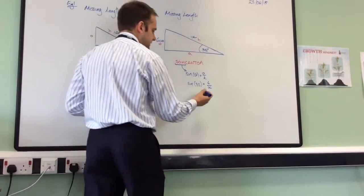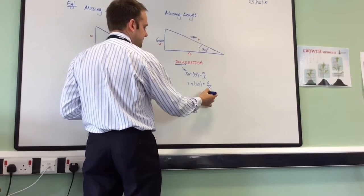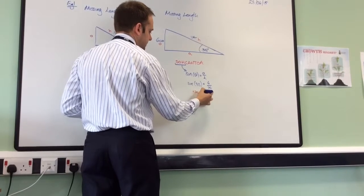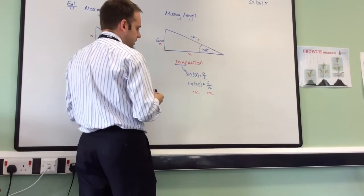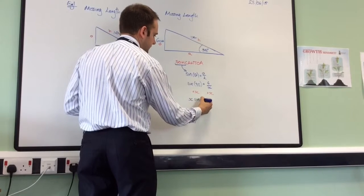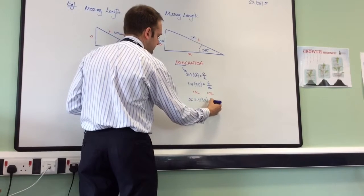I know that you've been doing this in science as well, so hopefully it's starting to come together. We begin by multiplying both sides by X to get it off the bottom of the fraction. Notice again that I'm putting that X at the beginning, not at the end. So X times sine of 35 is equal to 6.